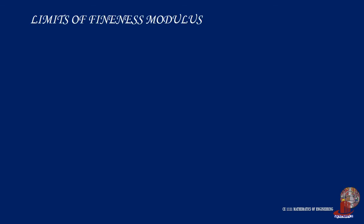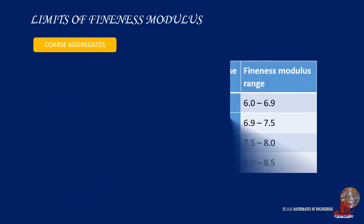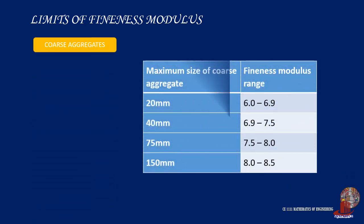The higher the fineness modulus, the coarser the aggregate. Fineness modulus of coarse aggregates varies from 5.5 to 8.0, and for all-in aggregates or combined aggregates, fineness modulus varies from 3.5 to 6.5. The range of fineness modulus for aggregates of different maximum sizes is shown.